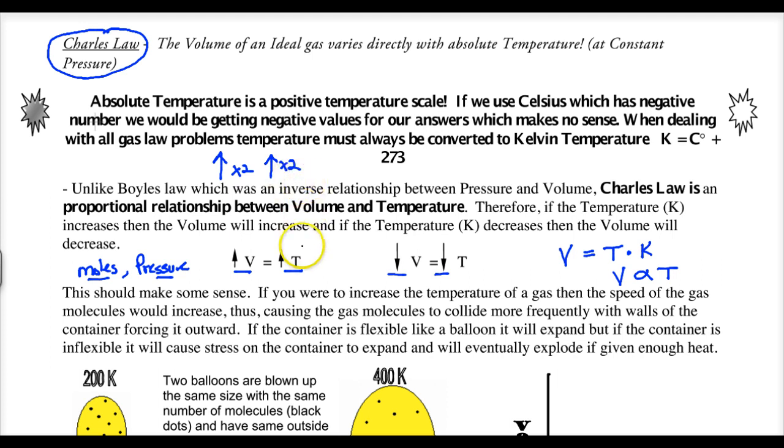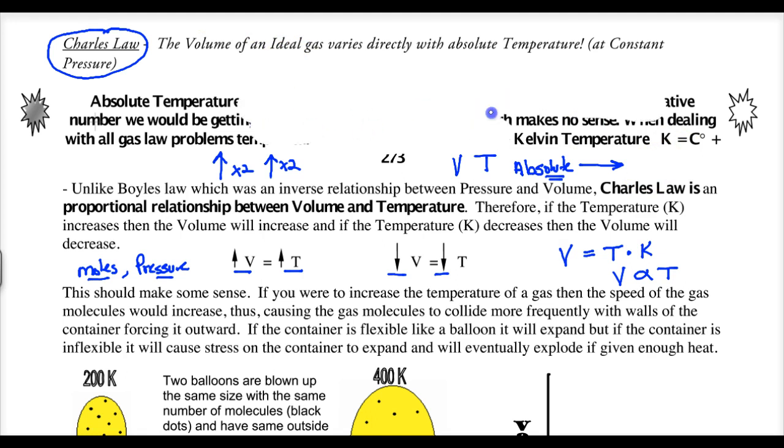Now it's important to realize that the volume-temperature relationship we're talking about is with absolute temperature. What I mean by absolute, a temperature scale that stays positive, and the number of that temperature scale is reflective back to a zero. Let me explain that again.